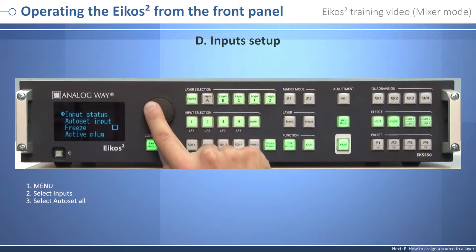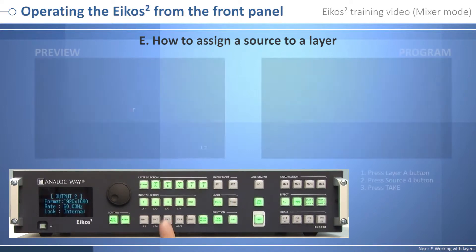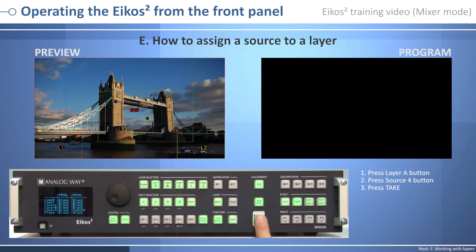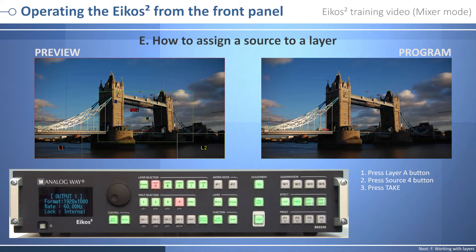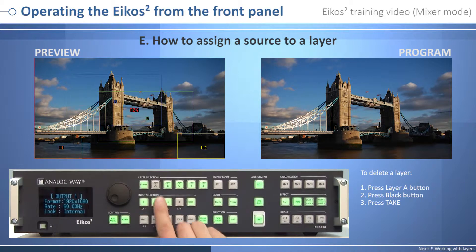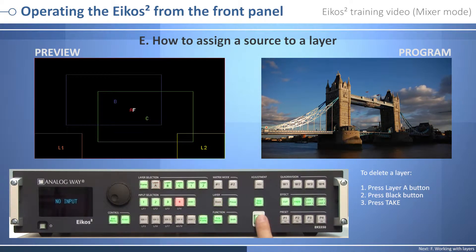How to assign a source to a layer using the front panel: you will always work with the preview bus — it is not possible to modify the program. To assign a source to a layer, press Layer A and press Source Number Four, then press Take to view the result on the program screen. To delete a layer from the preview screen, press the Layer button, press the Black button, then press Take to view the result.